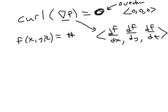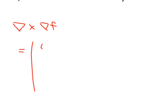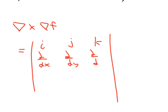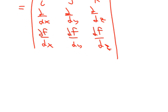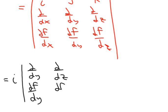Let's prove this. The curl of the gradient of f is the cross product of the gradient operator with the gradient of f, which equals a determinant with i, j, k in the top row; ∂/∂x, ∂/∂y, ∂/∂z in the second row; and ∂f/∂x, ∂f/∂y, ∂f/∂z in the third row. The first piece is i times its minor: the two-by-two determinant of (∂/∂y, ∂/∂z) and (∂f/∂y, ∂f/∂z). Then minus j times its minor with (∂/∂x, ∂/∂z) and (∂f/∂x, ∂f/∂z).